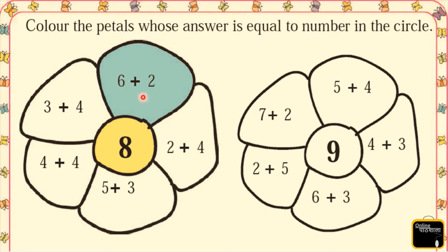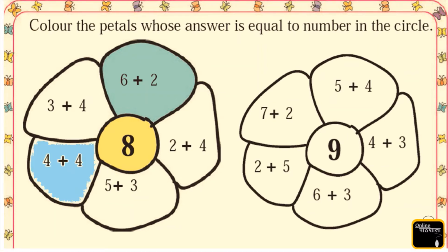The next one: 3 plus 4 is equal to 8? No, 3 plus 4 is equal to 7, so we are not going to color this petal. Next, 4 plus 4 is equal to 8? Yes, 4 plus 4 is equal to 8, so we color this petal in blue. Next, 5 plus 3 — what is 5 plus 3? Yes, 5 plus 3 is equal to 8, so we color this petal also.